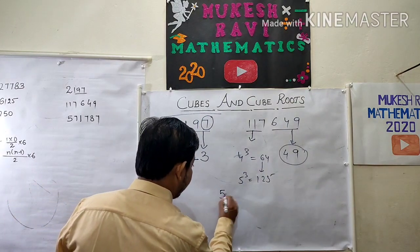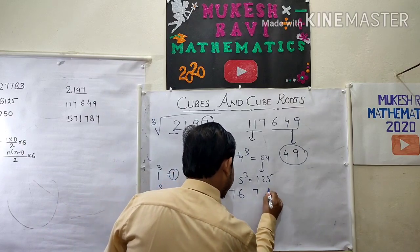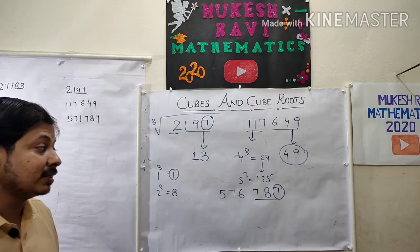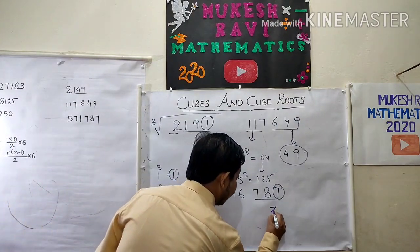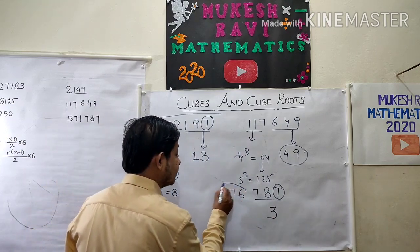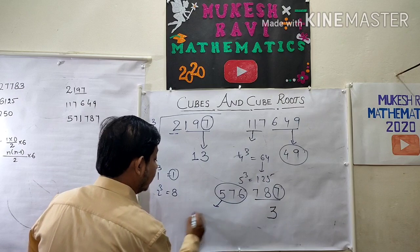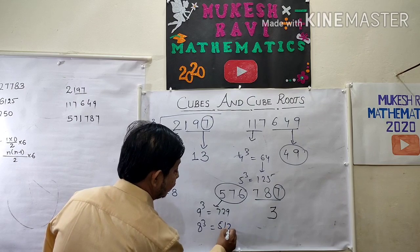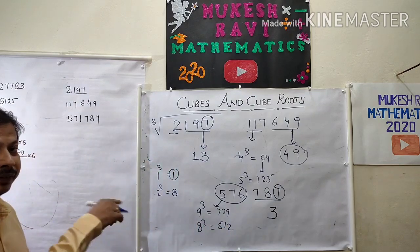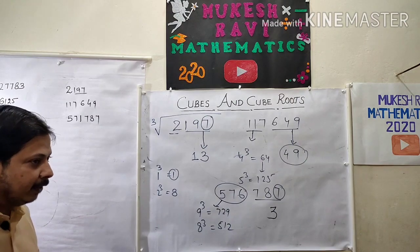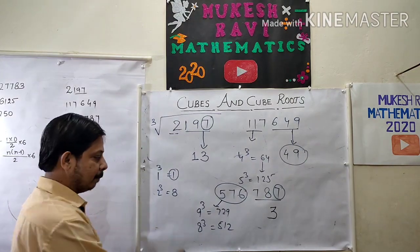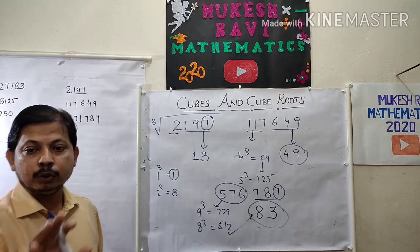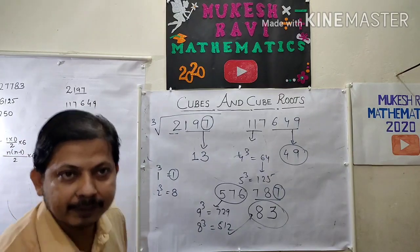Suppose 571787. The end digit is 7. Whenever 7 is there, the cube root ends with 3. Now check the remaining part: 571 is between 8³ = 512 and 9³ = 729, so the lesser value gives 8. Therefore the cube root of 571787 is 83. This is my shortcut to find the cube roots of any given number by checking the unit digit and the remaining portion.